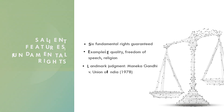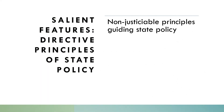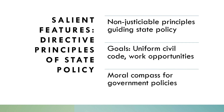The fourth one is the directive principles of state policy. These are non-justiciable principles that guide the state towards achieving a welfare society. They include establishing a uniform civil code and providing opportunities for work. While not directly enforceable in courts, they provide a moral compass for government policies.